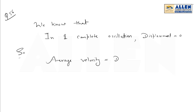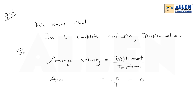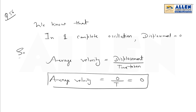Average velocity is defined as displacement upon total time taken. Here, displacement is zero and total time for one oscillation is T. So the average velocity for one oscillation of the particle is zero. So zero is the right answer.